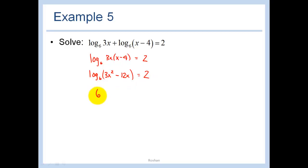In other words, 6 squared is equal to 3x squared minus 12x. Isn't that what logarithms mean? 6 squared is equal to that. So we have 36 equals 3x squared minus 12x. Let's bring everything to one side. 3x squared minus 12x minus 36 is equal to 0.